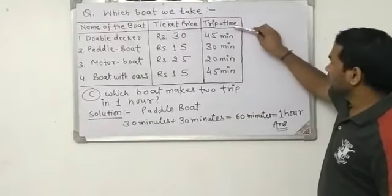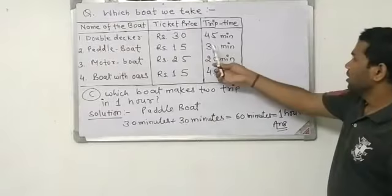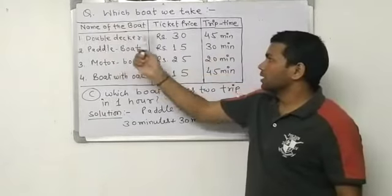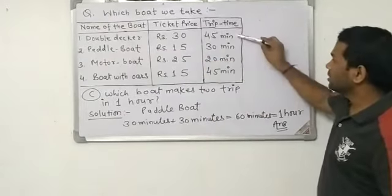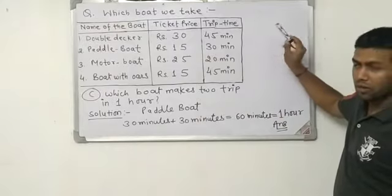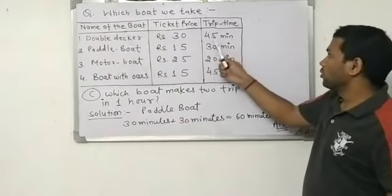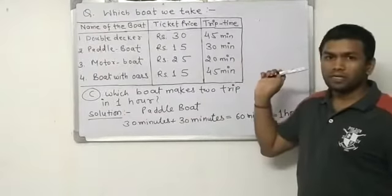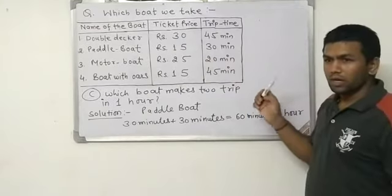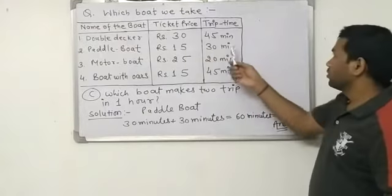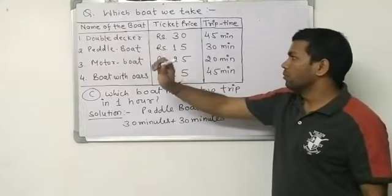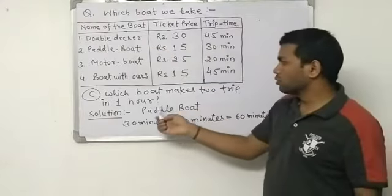So let's check the trip time. Number one, double decker. In a double decker this time is 45. So 45 plus 45, that is 90 minutes, above the one hour. So it is not a boat which makes two trips in one hour.